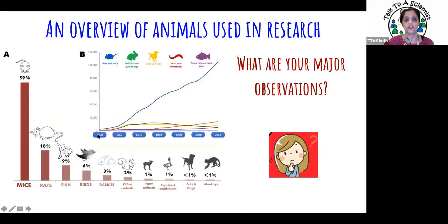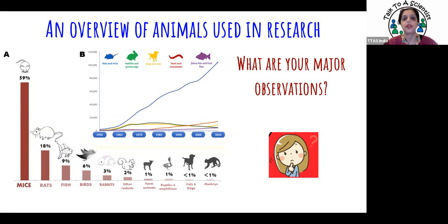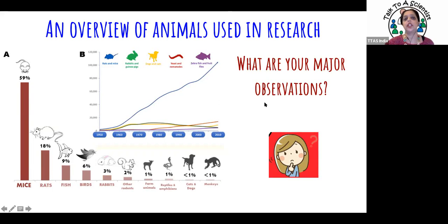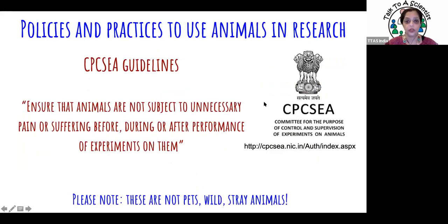Now look at the use of these animals in research over the years, from 1950 on the extreme left to 2010 on the right. What do you notice about the use of animals? Rats and mice have been used steadily more because they're much easier to use than dogs, rabbits, guinea pigs, and cats, and they better mimic certain conditions than simple yeasts and nematodes. There's been an increase in animal use over the last 60 years.